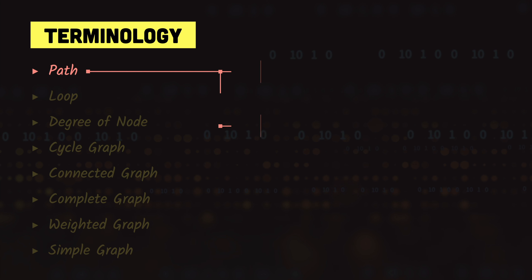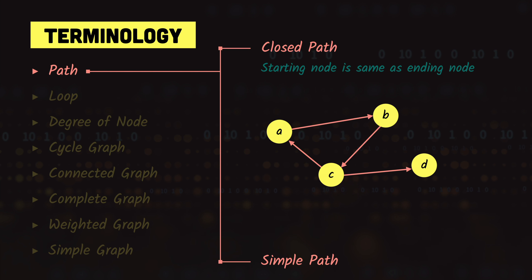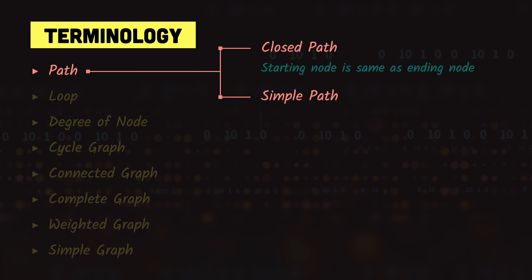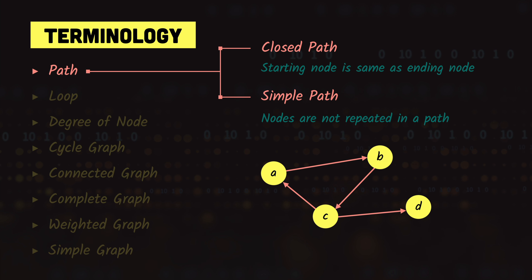A path can either be a closed path or a simple path. A closed path is one where the starting and ending nodes are the same — for example, A, B, C, A, where we start and end at node A. A simple path is any path where nodes are not repeated. For instance, the path C, A, B, C, D is not a simple path because node C is repeated. But the path C, A, B is a simple path because no node is repeated.